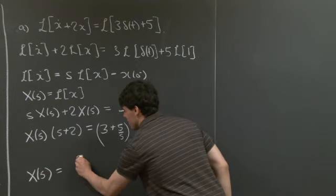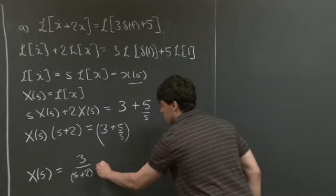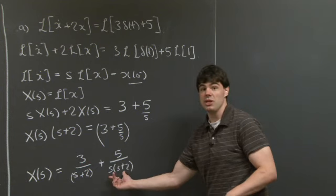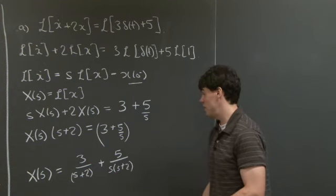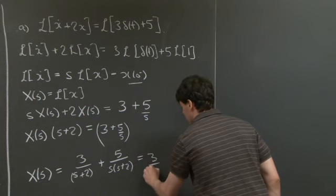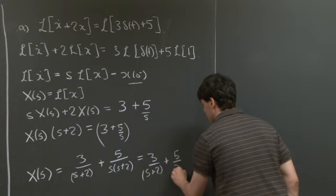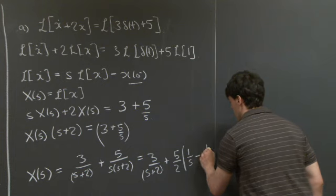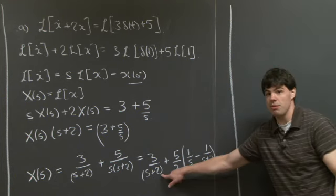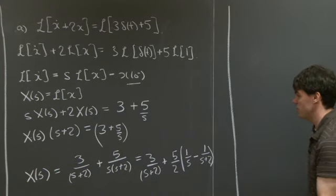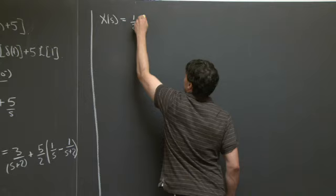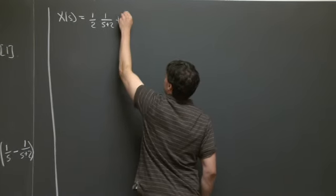This yields X(s) equals 3 divided by (s plus 2) plus 5 divided by s(s plus 2). For the second piece, we use partial fractions to decompose 5 over s(s plus 2) into a term over s and a term over (s plus 2). Working that out gives 5 halves times 1 over s minus 5 halves times 1 over (s plus 2). Combining the 3 over (s plus 2) with the minus 5 halves over (s plus 2) gives 1 half over (s plus 2). So X(s) equals one half times 1 over (s plus 2) plus 5 halves times 1 over s.